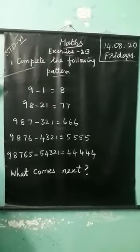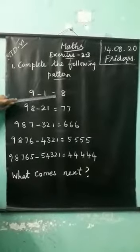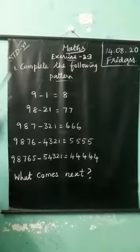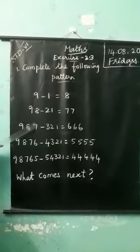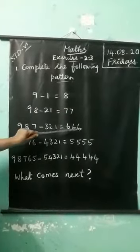First one, complete the following pattern. You already know the patterns. Okay. See the number pattern. 9 minus 1 is equal to 8. 98 minus 21 is equal to 77.